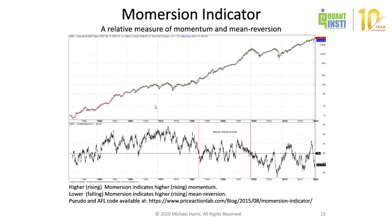In this chart, in the 1950s, 60s and 70s up to the 80s, Mommersion was very high. Then from 1985 to about 2000, there was a regime change process. And from 2000, the indicator shows that the market became mostly mean-reverting.